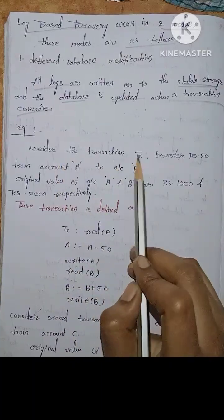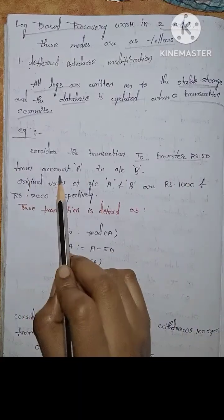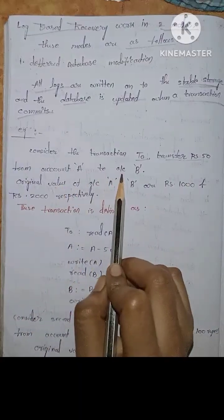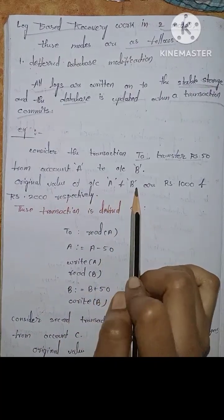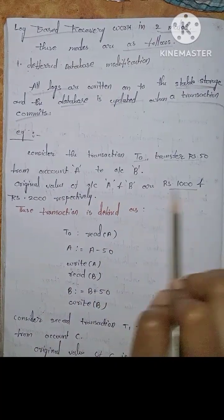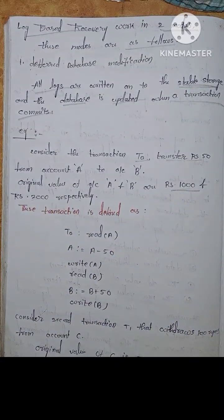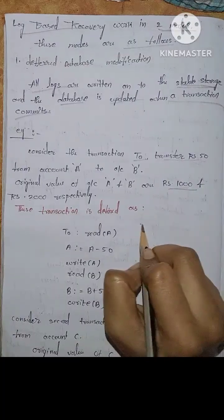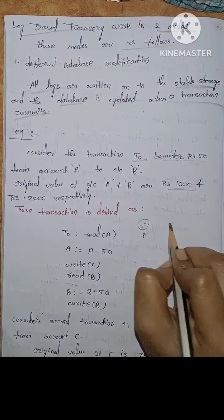Consider transaction T0 that transfers 50 rupees from account A to account B. The original values of accounts A and B are 1000 and 2000 respectively.